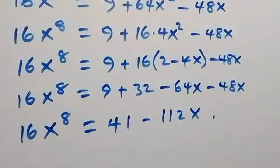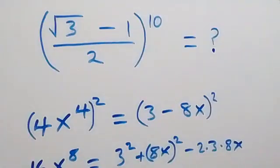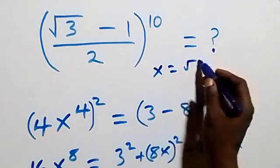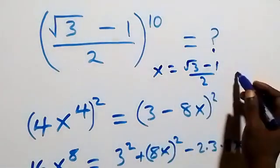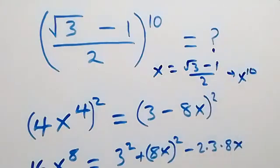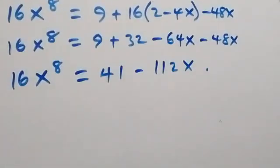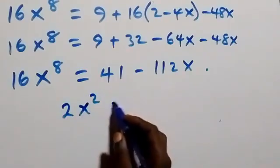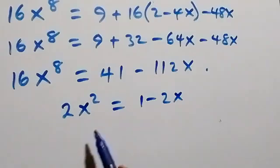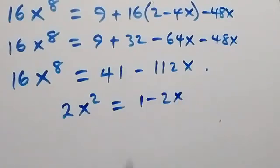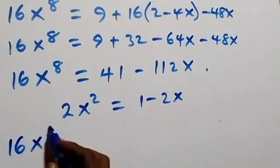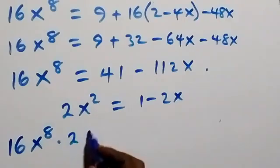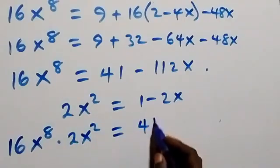We are now interested in finding x raised to the power 10, since x was represented as (root 3 minus 1) over 2. To get x^10, we multiply both sides by x squared. We recall that 2x squared equals to 1 minus 2x, so we multiply the left side by 2x squared and the right side by 1 minus 2x. This gives 16x⁸ times 2x squared equals to (41 minus 112x).